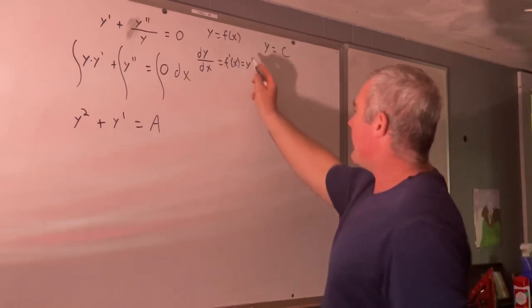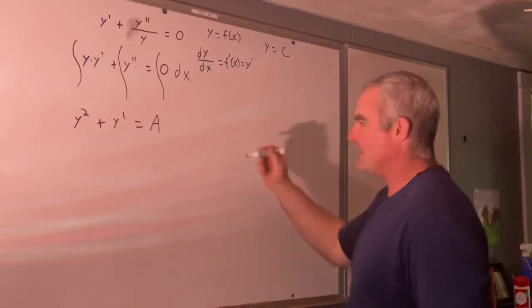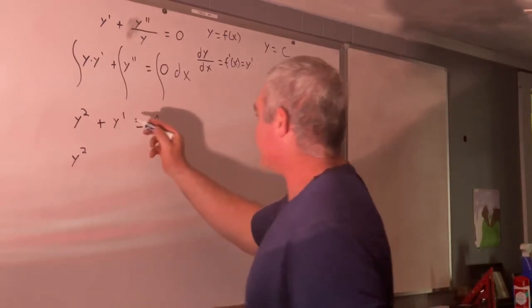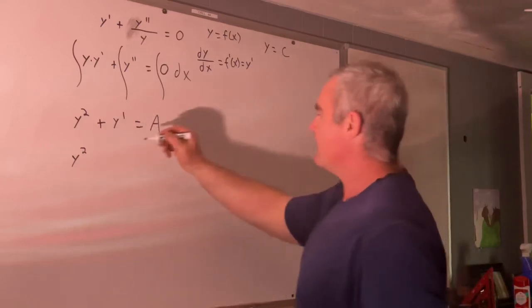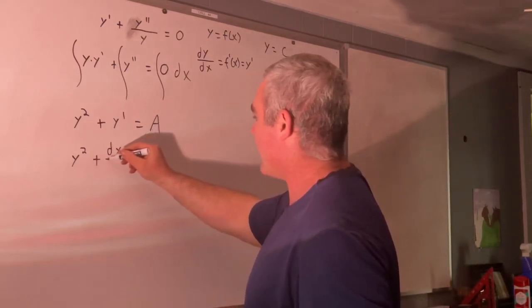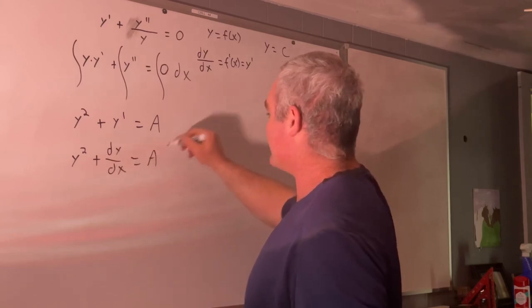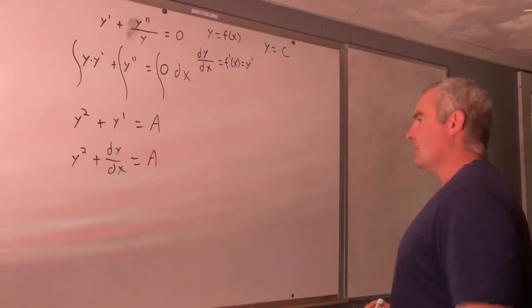So now I'll just plug that into here. We're going to get y squared doesn't change, but instead of writing y prime, I'll write plus dy dx, and that's still equal to a.